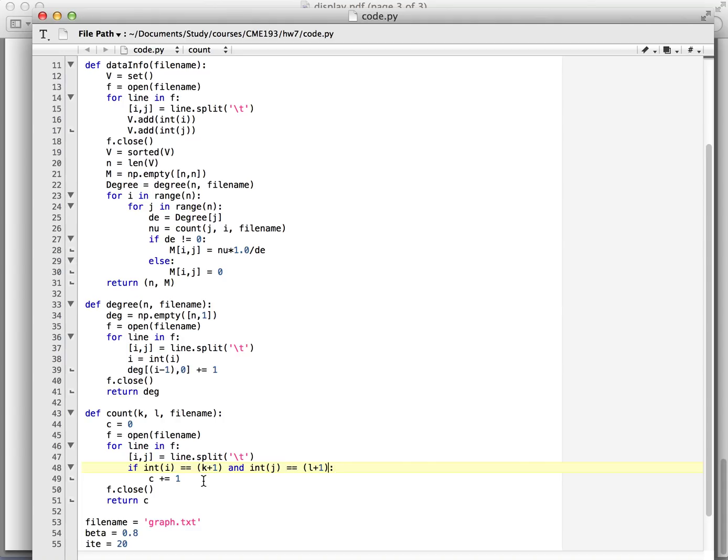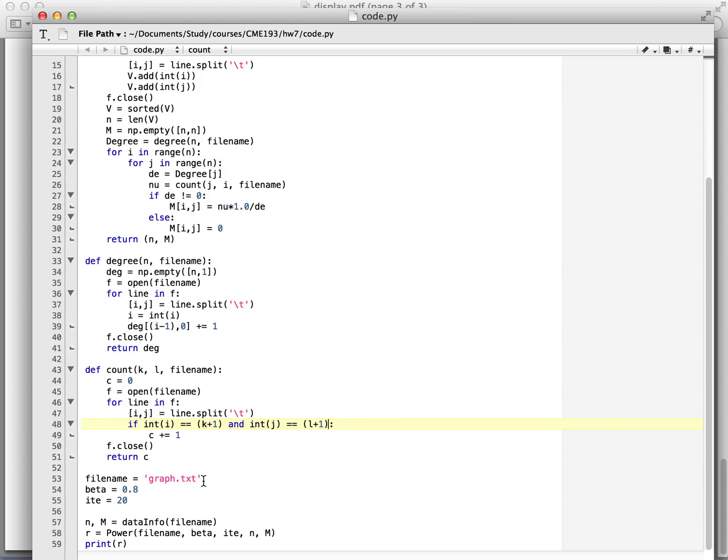In the count function, we read the file to calculate how many edges are from vertex k to vertex l. Then we will try this method. We use the graph data, set beta to be 0.8 and do 20 iterations and print the rank vector r.